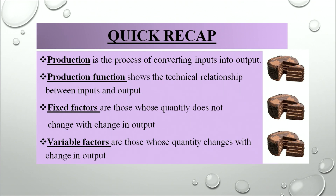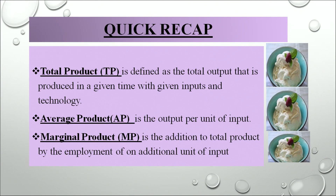To recap: production is the process of converting input into output, and the production function shows the technical or mathematical relationship between input and output. Fixed factors are those which cannot vary with the change in the level of output due to the time constraint, while variable factors can be changed with the change in level of output — labor being the key variable factor in the short run. TP is the total output produced in a given time with given inputs and technology; AP is the output per unit of input; and MP is the addition to total product by employing one additional unit of input. Thank you learners.